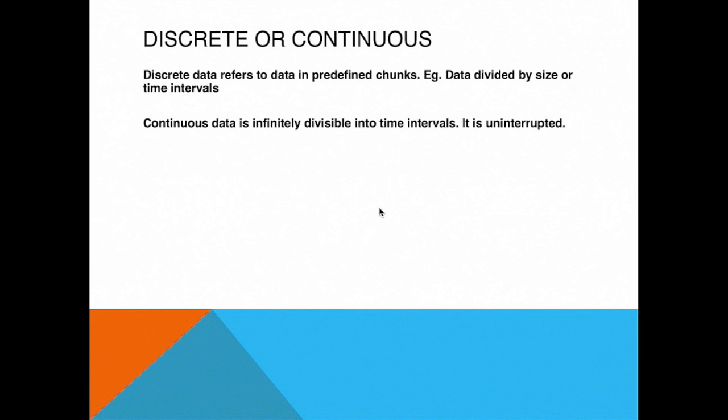All right. Discrete data refers to data in predefined chunks. Example data that is divided by size or time intervals, and continuous data is infinitely divisible into time intervals. It is uninterrupted.